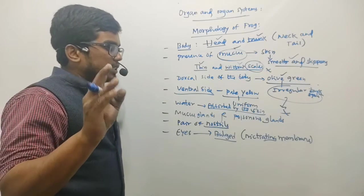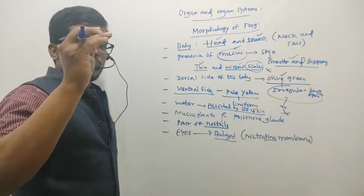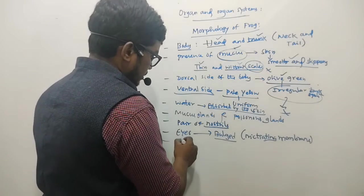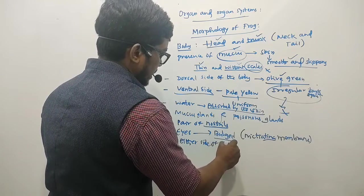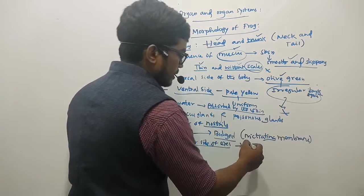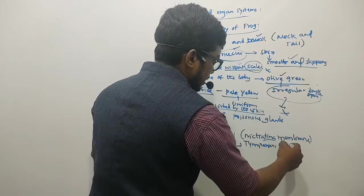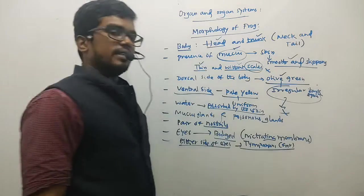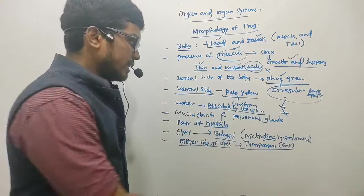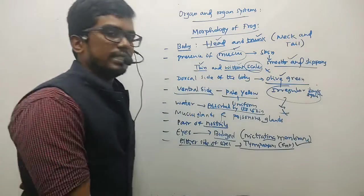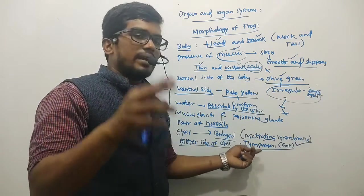On either side of the eyes, we have a membranous tympanum. Near the eyes on both sides, there is a membranous structure called the tympanum — it is essentially the ear. The role of this tympanum is to receive sound signals. However, the pinnae, as found in human beings, are absent in frogs.